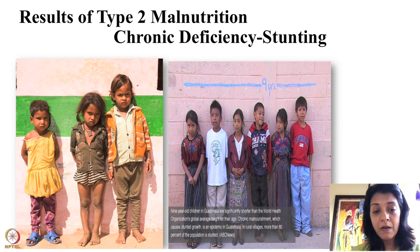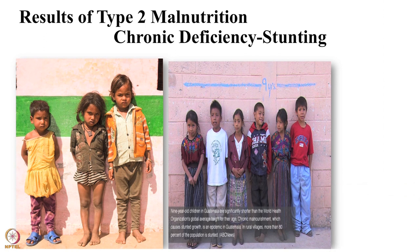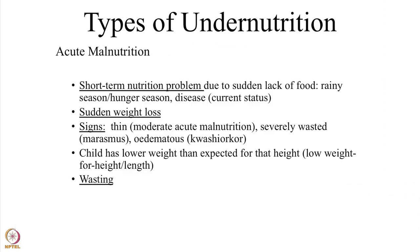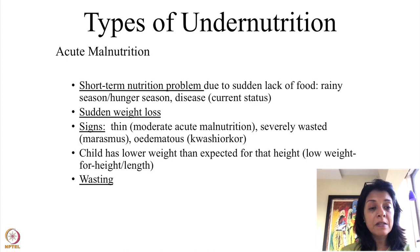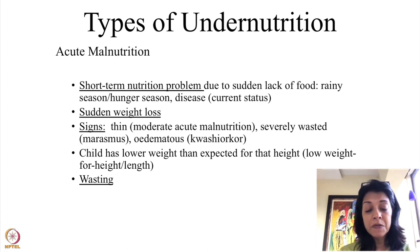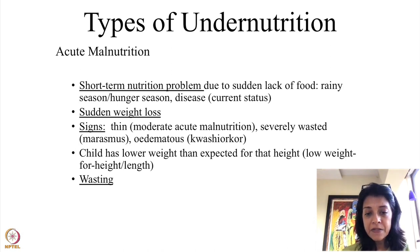Looking at a photo example from Guatemala — children who are 9 years old but are supposed to be taller — they are all short, meaning obviously they haven't received type 2 nutrients for a long time. Acute malnutrition is a short-term nutrition problem, primarily type 2 micronutrient deficiency. It could be because of a sudden lack of food — in rainy season, during famine, or any emergency — causing sudden weight loss and a visibly wasted, very thin child.